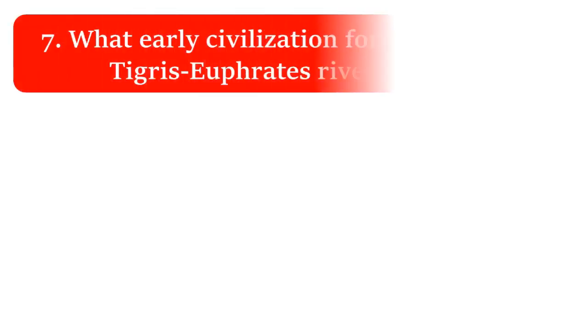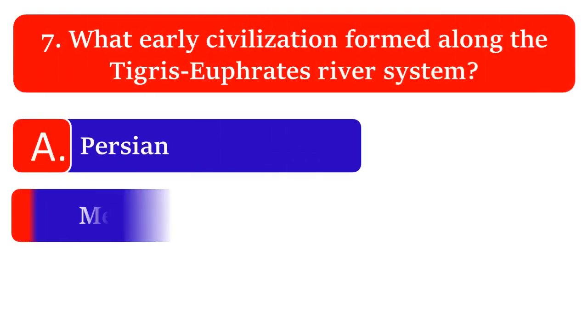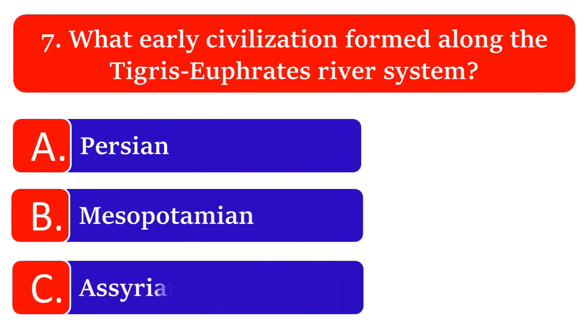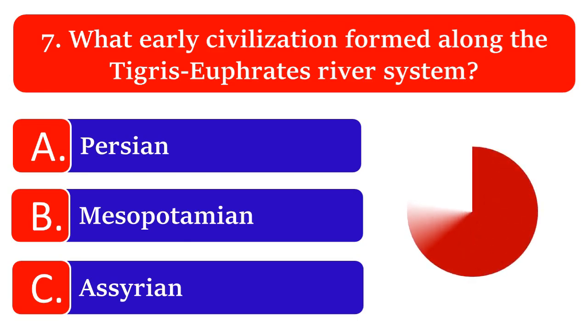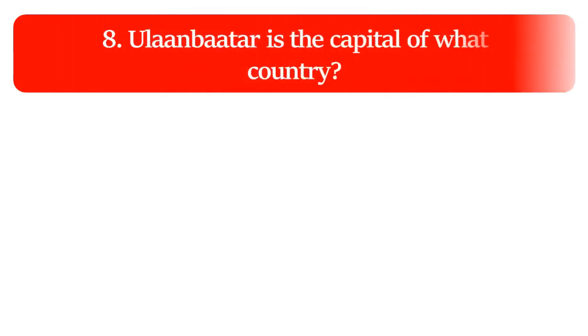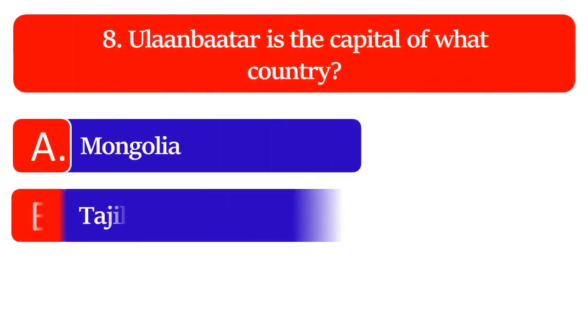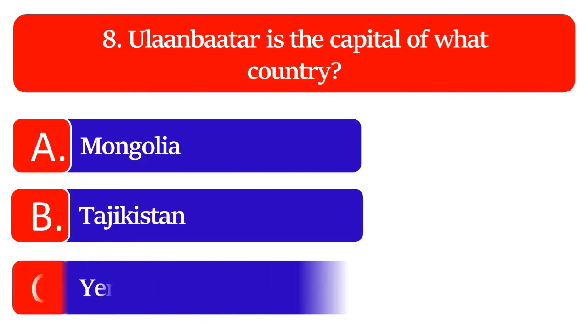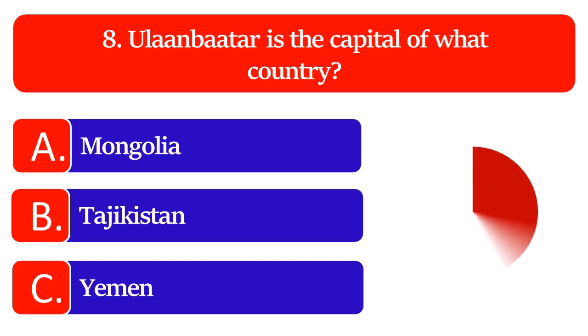What early civilization formed along the Tigris-Euphrates river system: Persian, Mesopotamian or Assyrian? The great answer is Mesopotamian. Ulaanbaatar is the capital of what country: Mongolia, Tajikistan or Yemen? The great answer is Mongolia.